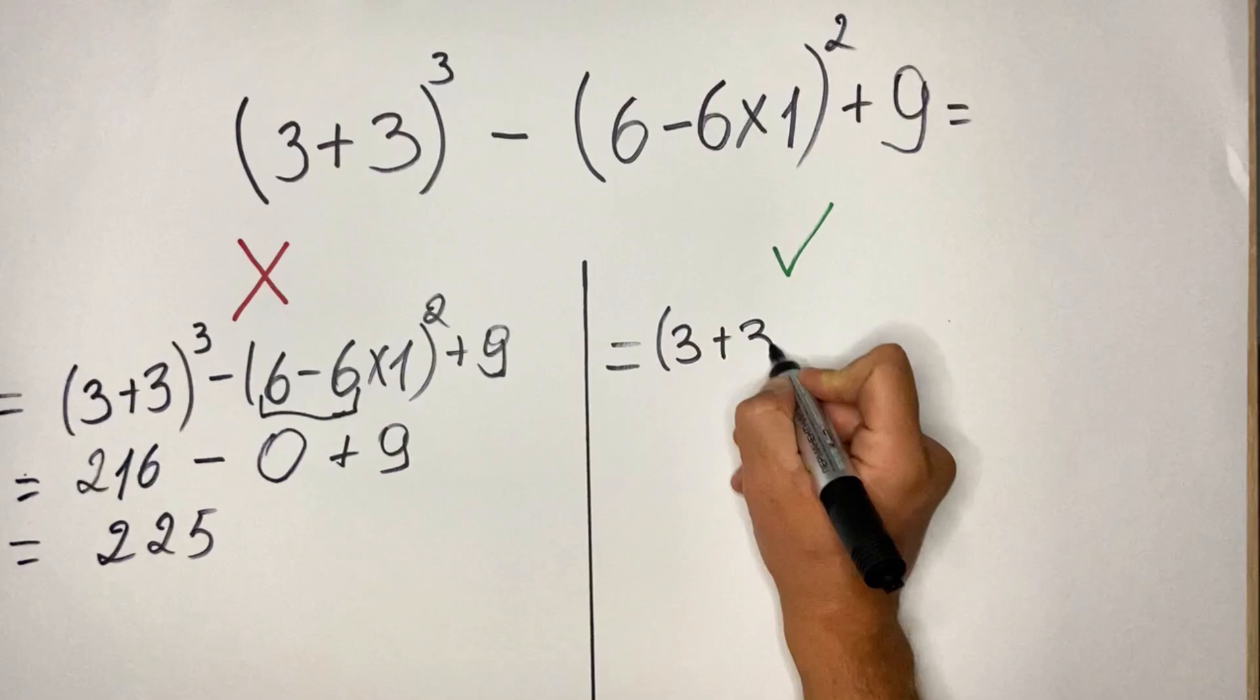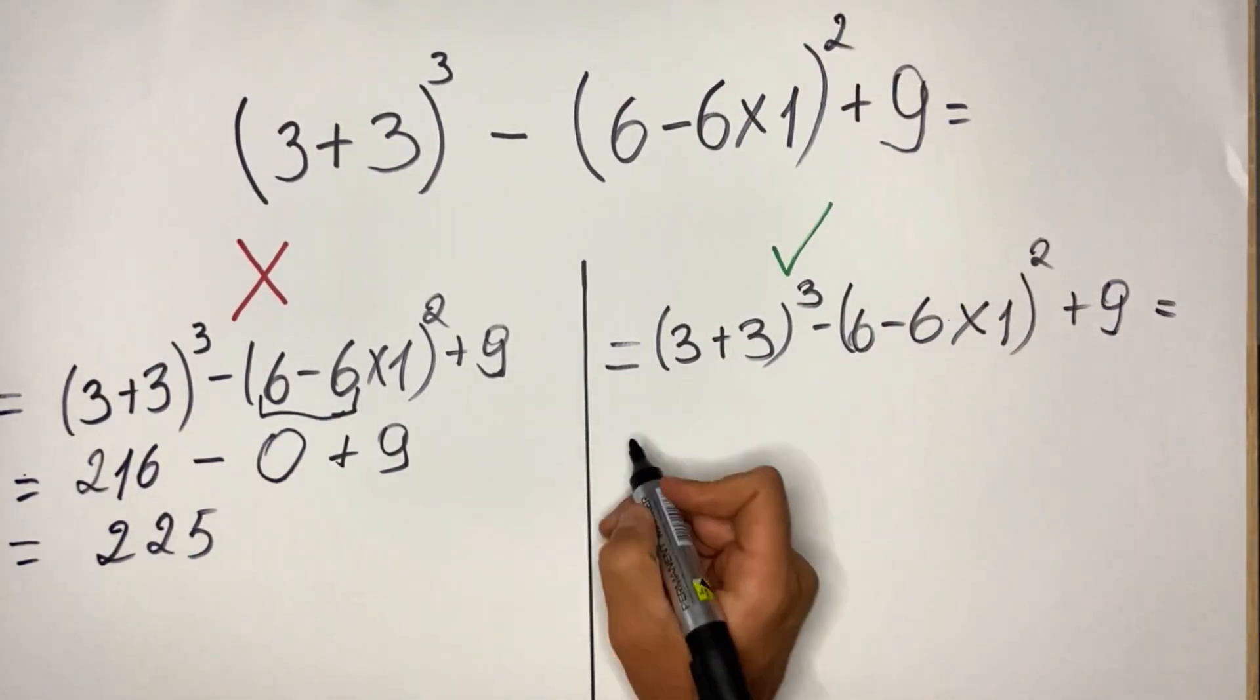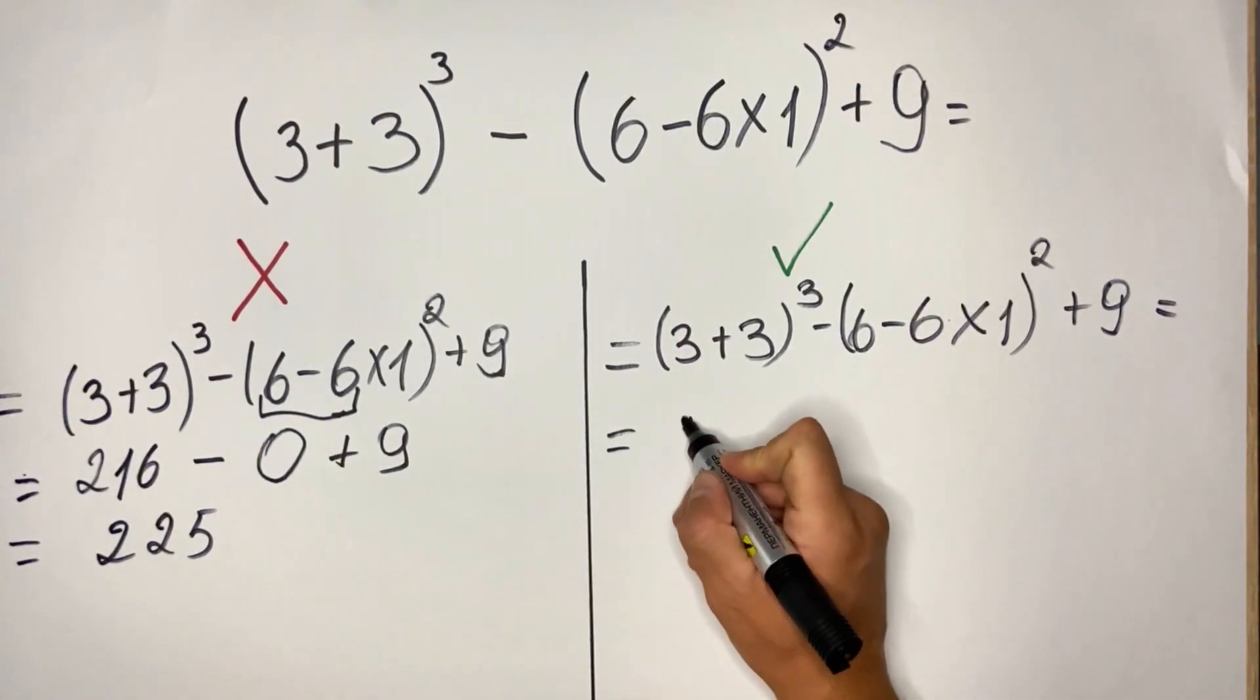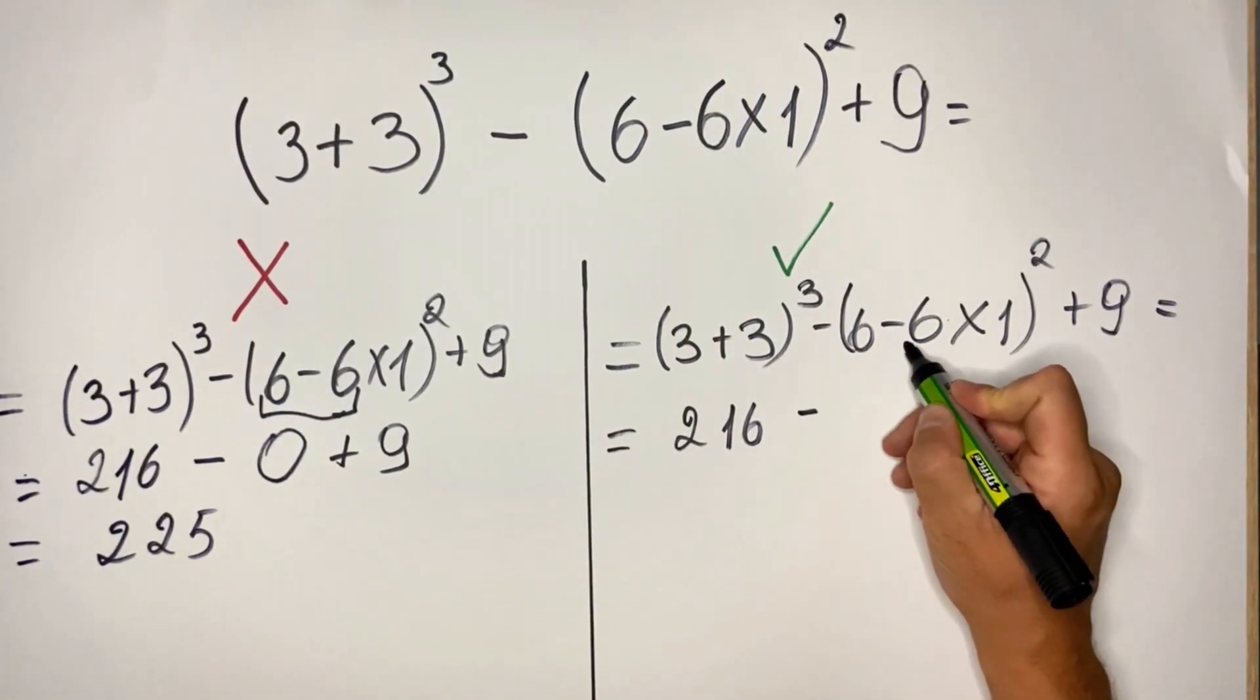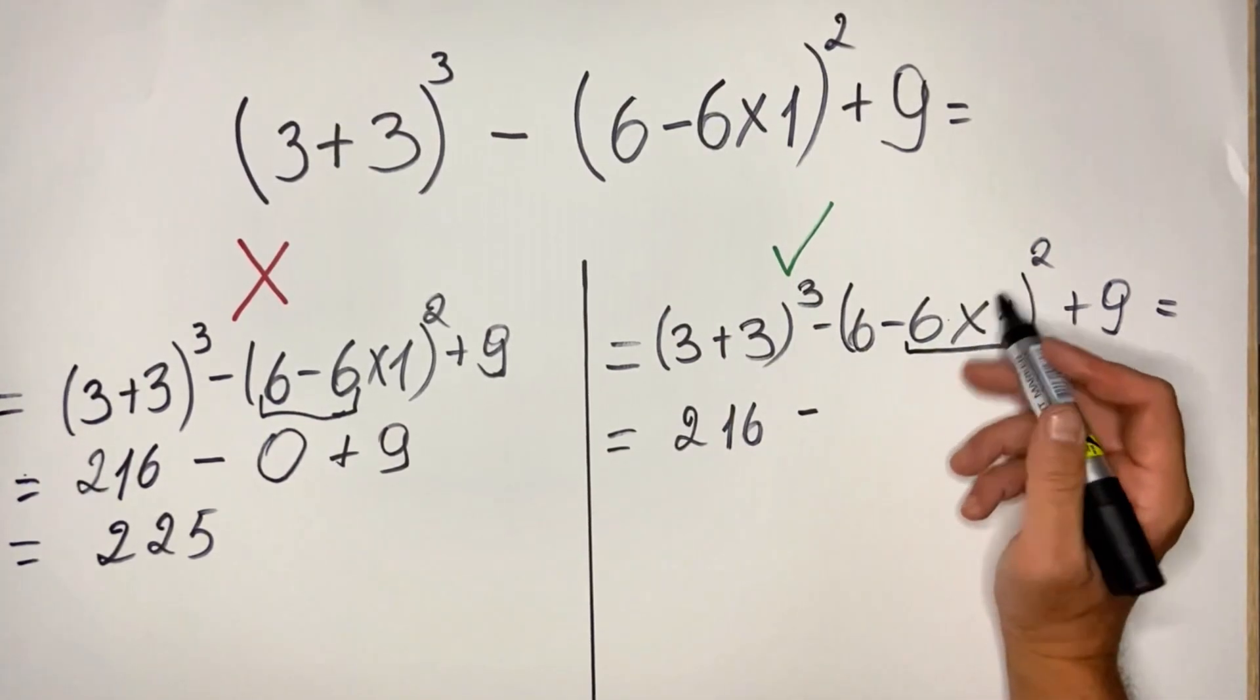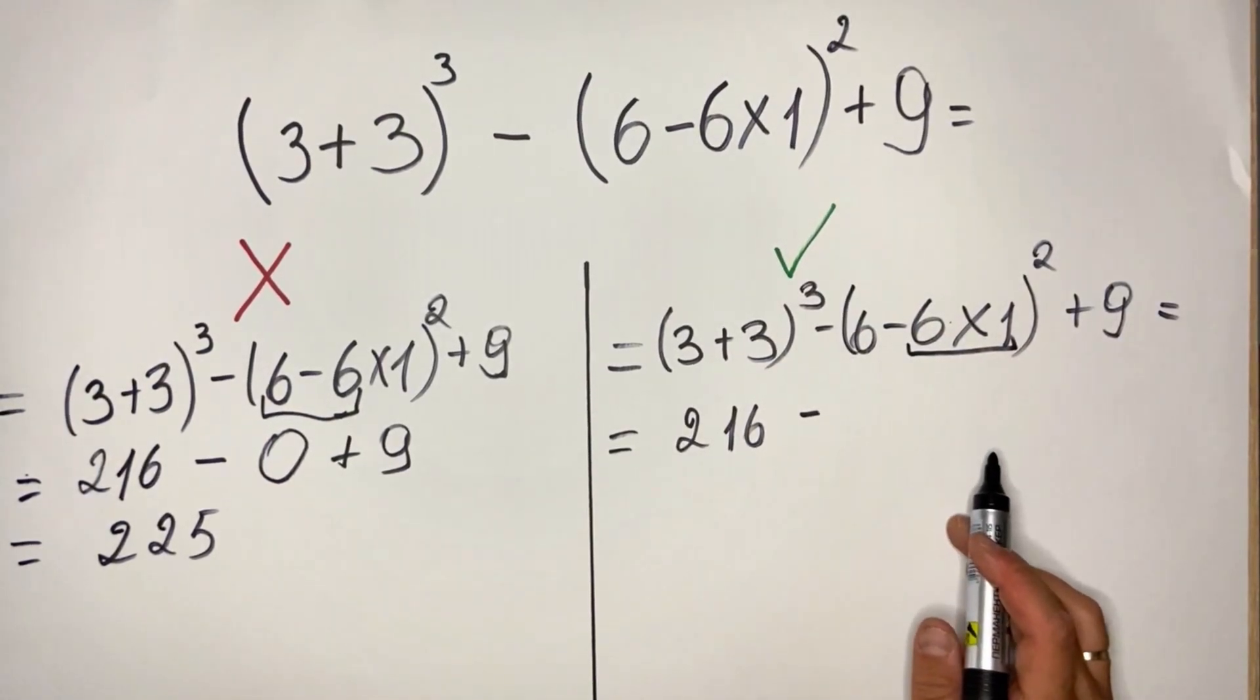So let me go quickly. So we have here, as we saw, 216 minus—sorry I'm doubling, but still, first we do here 6 multiply by 1, because PEMDAS, first you have after the parenthesis and the exponent, you have the multiplication or division.